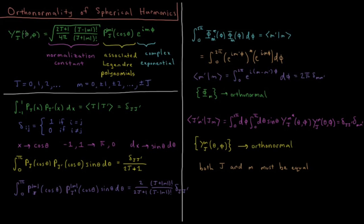Theta and phi are the angular coordinates in spherical polar. Theta is the polar angle from the z-axis. Phi is the azimuthal angle in the xy plane. These functions equal a normalization constant times a polynomial of cosine theta, the associated Legendre polynomials, times a complex exponential in phi.